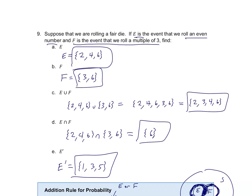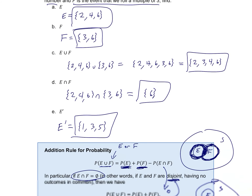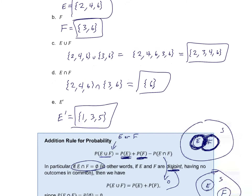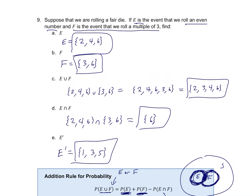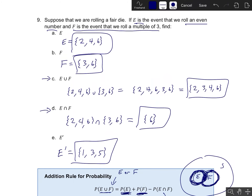Before we move on to continuing with this addition rule for probability, I thought it might be useful to give you a colloquial distinction between E union F and E intersect F. I thought I might go back to example 9 for a second and just point out the differences between these two things, because I think these are the two that people are most likely to get tripped up with.